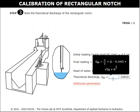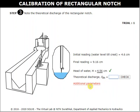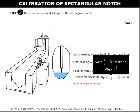Using the formula given and additional parameters, calculate the theoretical discharge of the rectangular notch and enter the value here. Then click on check. Two chances will be given to enter the correct value. After that, click on result to get the value directly.